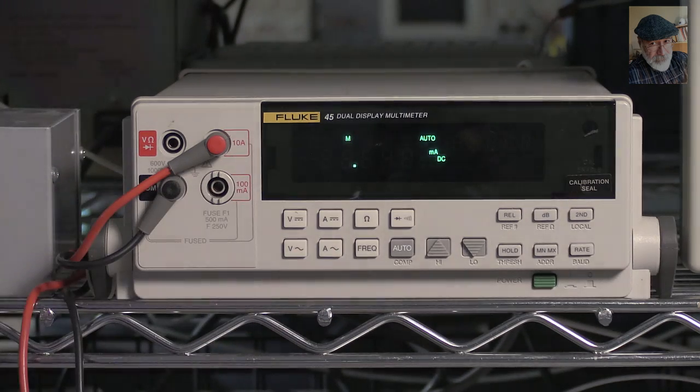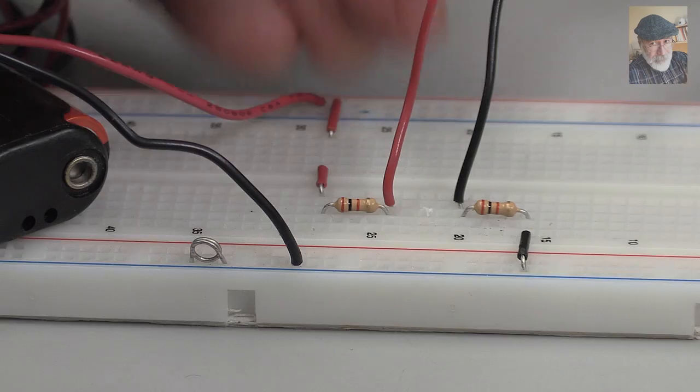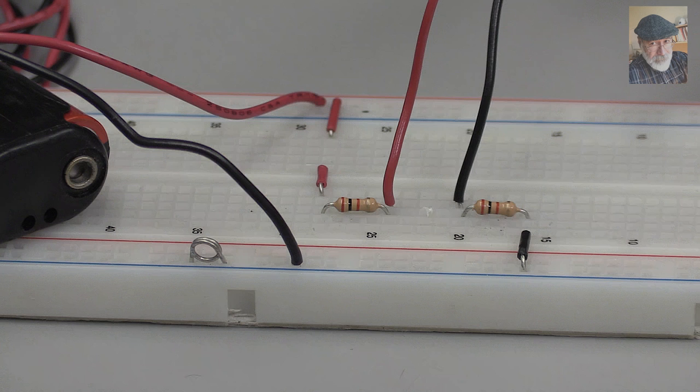Fifth, power up your circuit. The display should read the current in amps or milliamps entering the ammeter through the red probe and leaving the ammeter through the black probe.